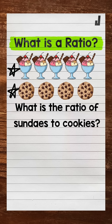When it comes to ratios, we can write them out three different ways. And remember, order matters when it comes to ratios. We need sundaes to cookies, so sundaes have to come first and cookies second. So always pay attention to wording and order.